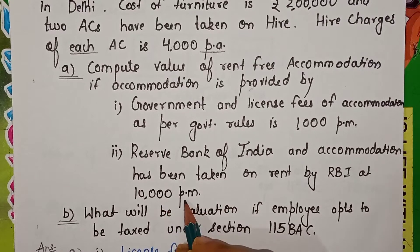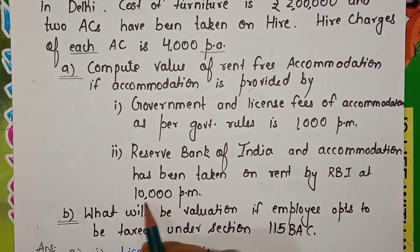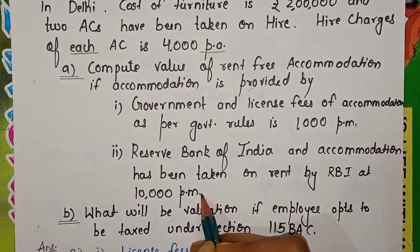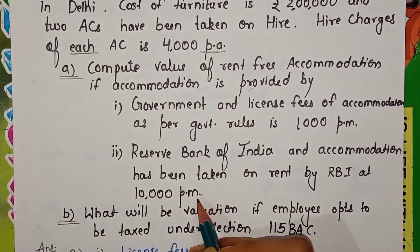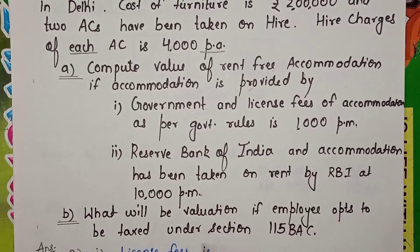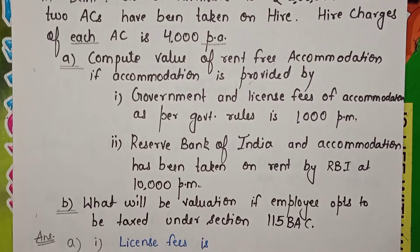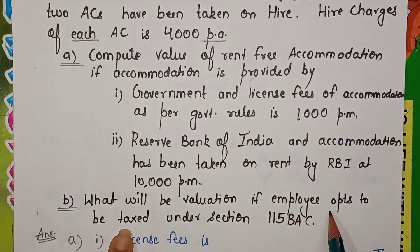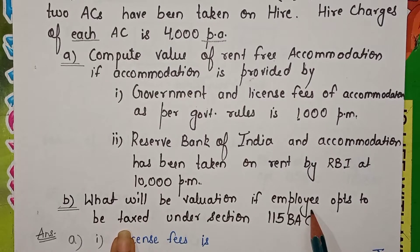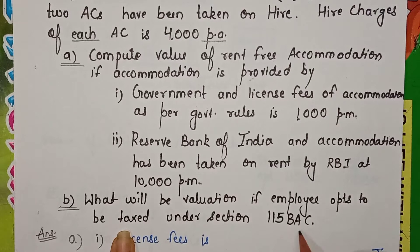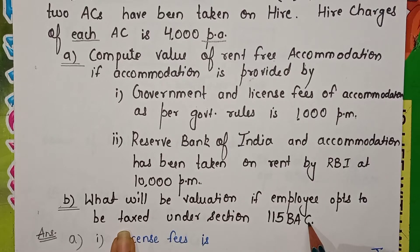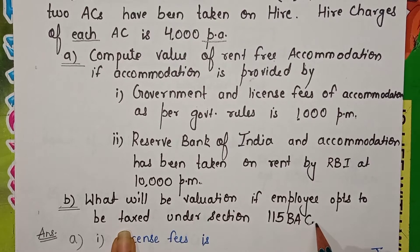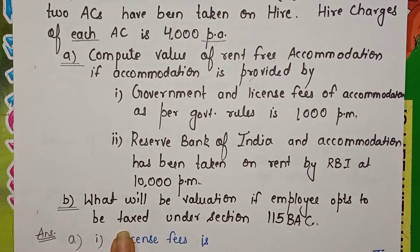RBI has not taken the accommodation itself — it has given it via a third party landlord. We are also asked in part B: if employee Mr. Raar opts for the new Section 115 BAC, what impact will that have on your answer?